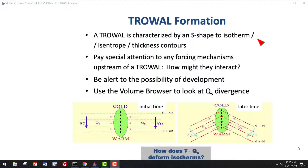A trowel is characterized by an S-shape to either isotherms, isentropes, thickness contours, or some other thermodynamic variable. If you identify a region of a trowel, pay special attention to any forcing mechanism upstream of that trowel and ask yourself how they might interact, because this forcing mechanism is approaching a region of lower stability and enhanced moisture, so you might expect a big response. Be alert to the possibility of development. You can use the volume browser to look at Q-S convergence — where you have Q-S converging, the canyon on the isentropic surface is going to develop.